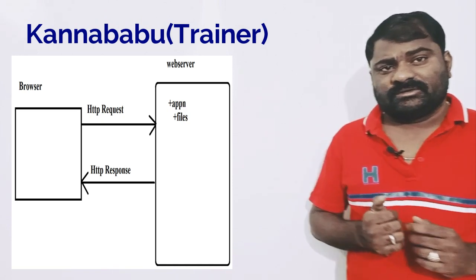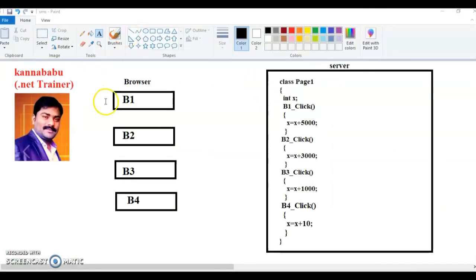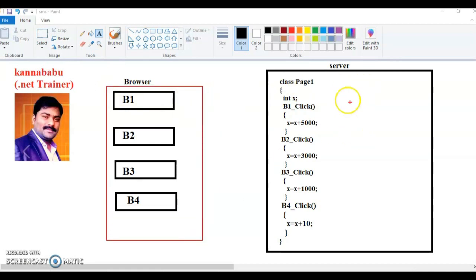Let us see one example practically. Here I have a browser and a server. In the browser there are four buttons, and on the server there is an application consisting of files with some code and design. Every page is a class. Here we have one instance variable X. The scope of an instance variable is within the class - we can access it anywhere within the class. Four buttons means four methods, one button means one method.